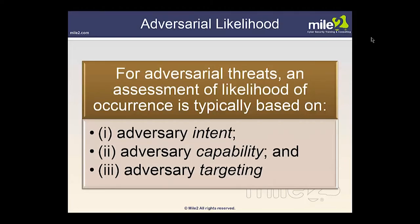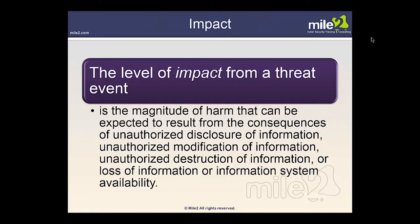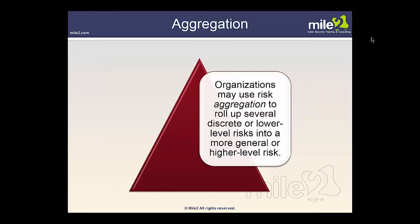For adversarial likelihood, the assessment is typically based on three factors: intent, capability, and targeting. This leads to understanding the likelihood of occurrence. Impact is the level of harm from a threat event — the magnitude of harm expected to result from unauthorized disclosure, modification, destruction of information, or the loss of information system availability. We measure those levels to understand what would happen if these things were to occur.